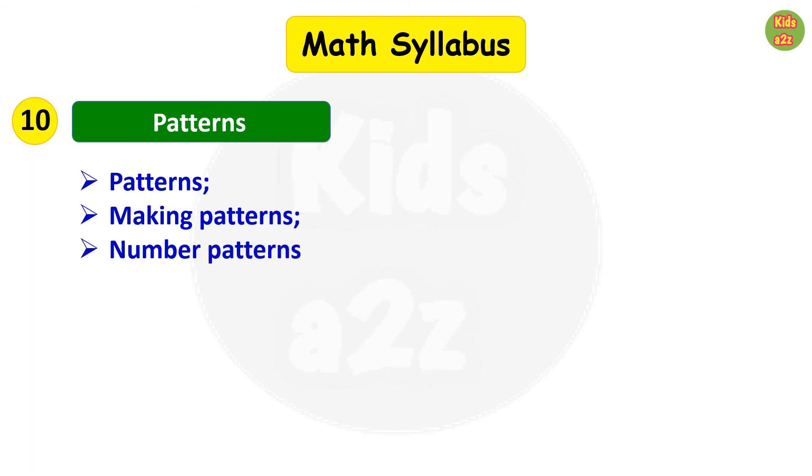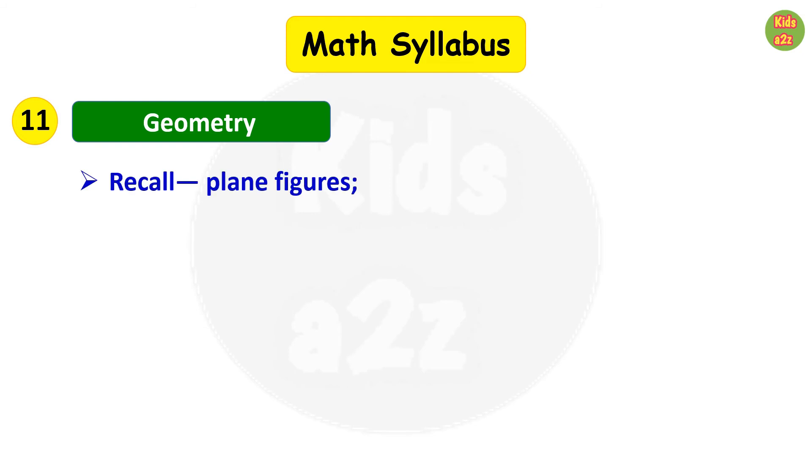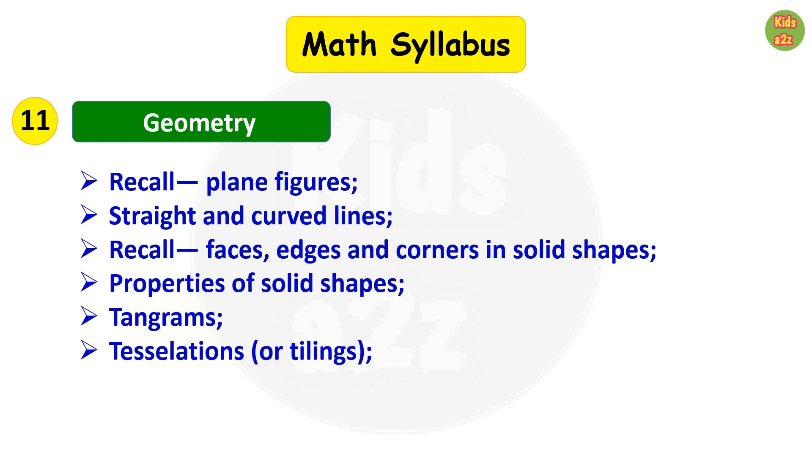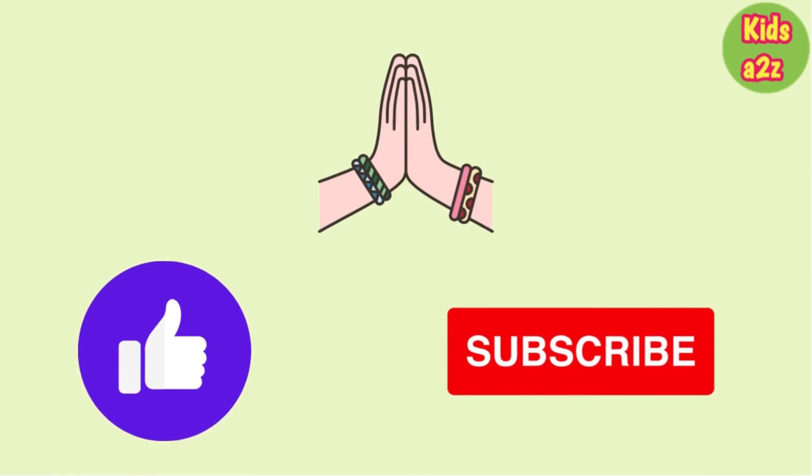Next is geometry. They will revise plane figures, straight and curved lines. They will revise faces, edges, and corners in solid shapes, properties of solid shapes. They will learn tangrams and tessellations. Tessellations means a pattern made by shapes that fit into each other without leaving a gap.